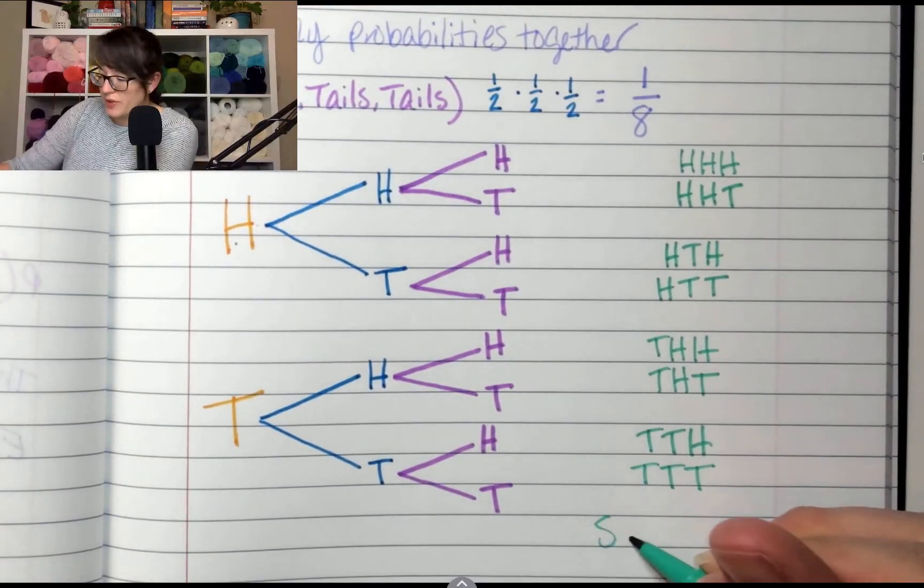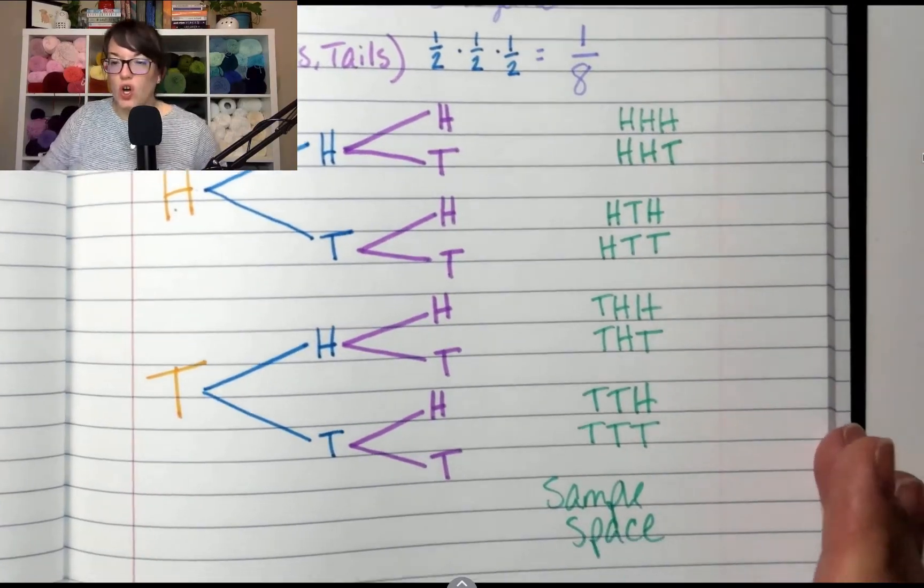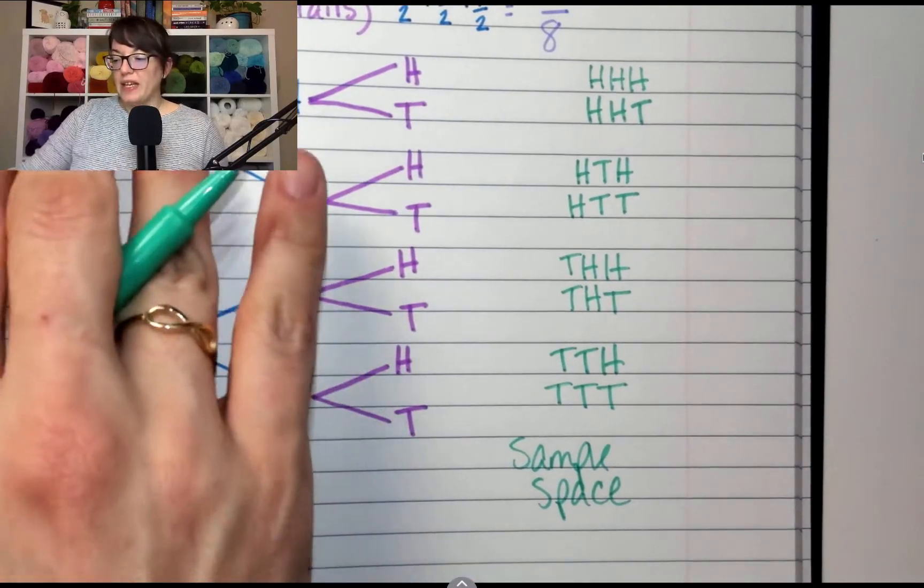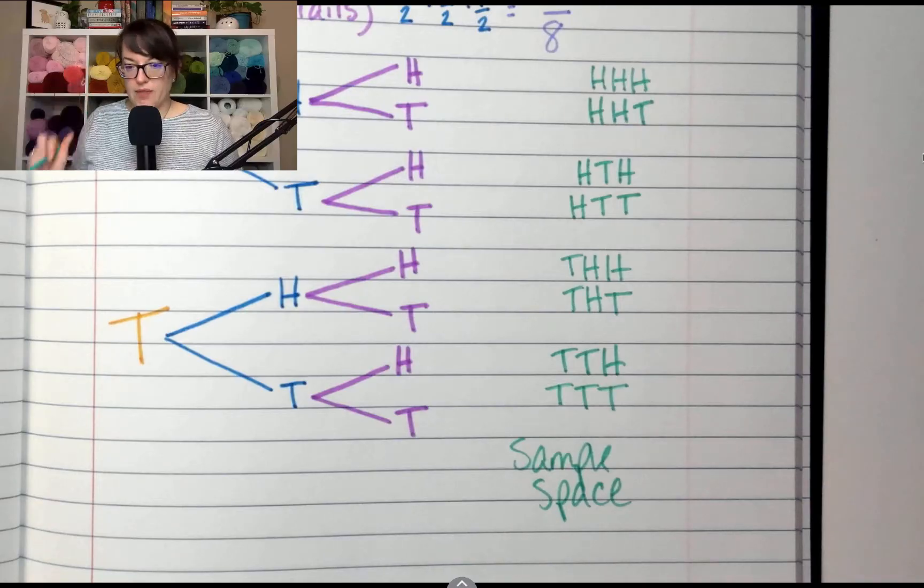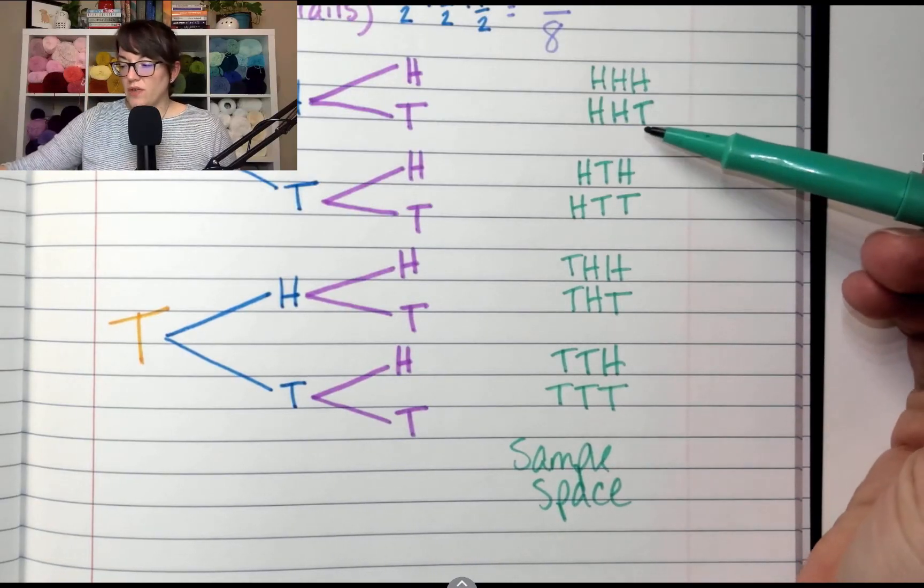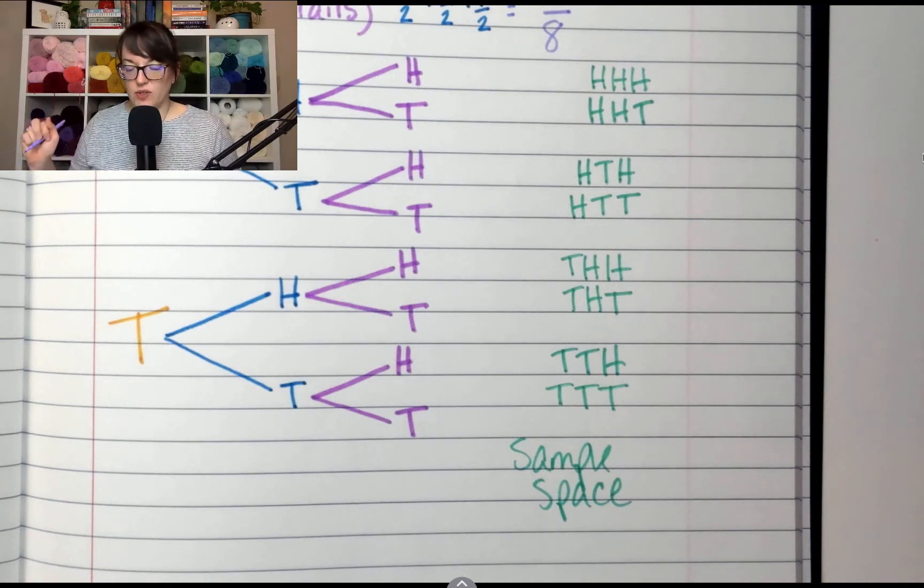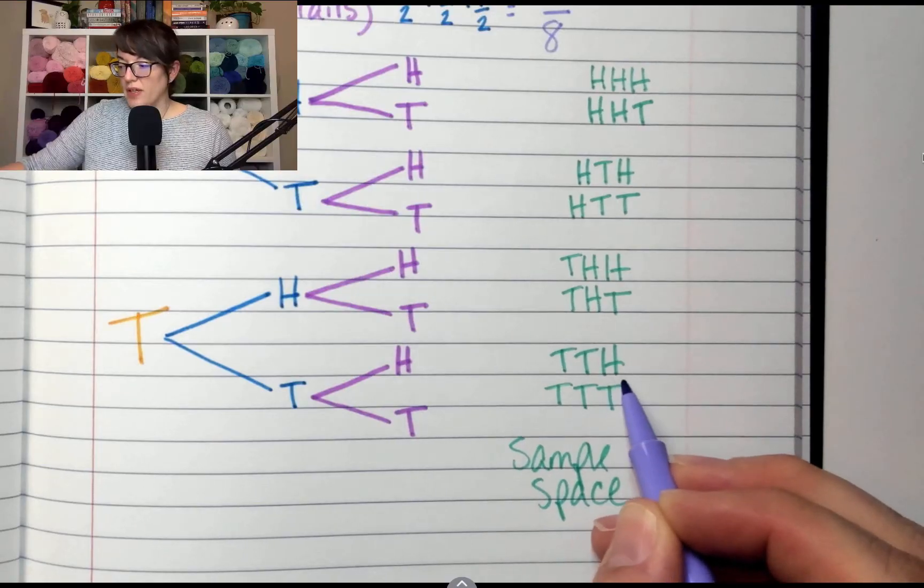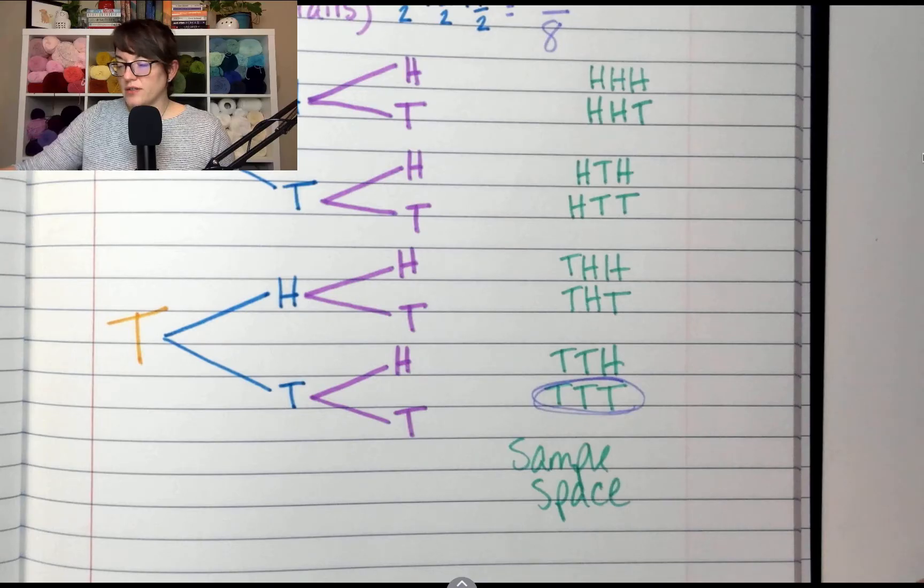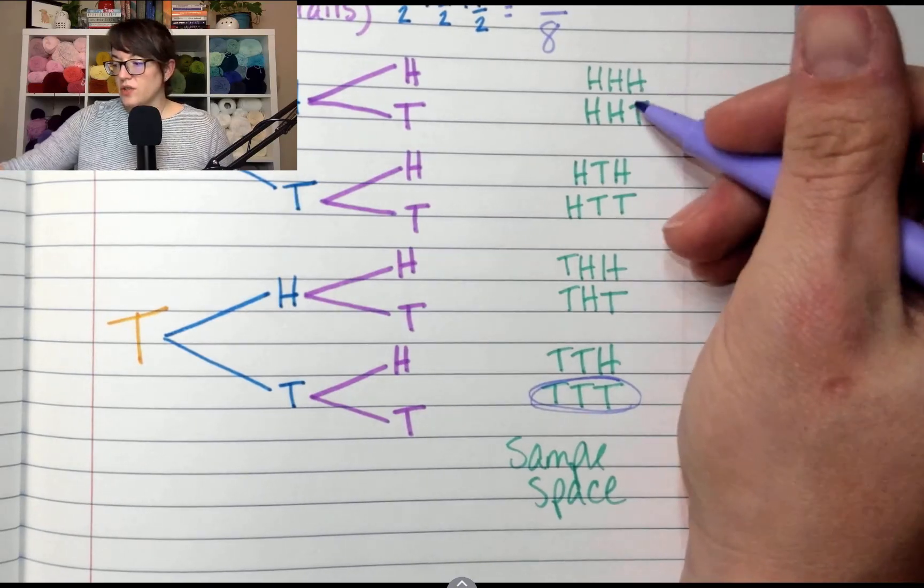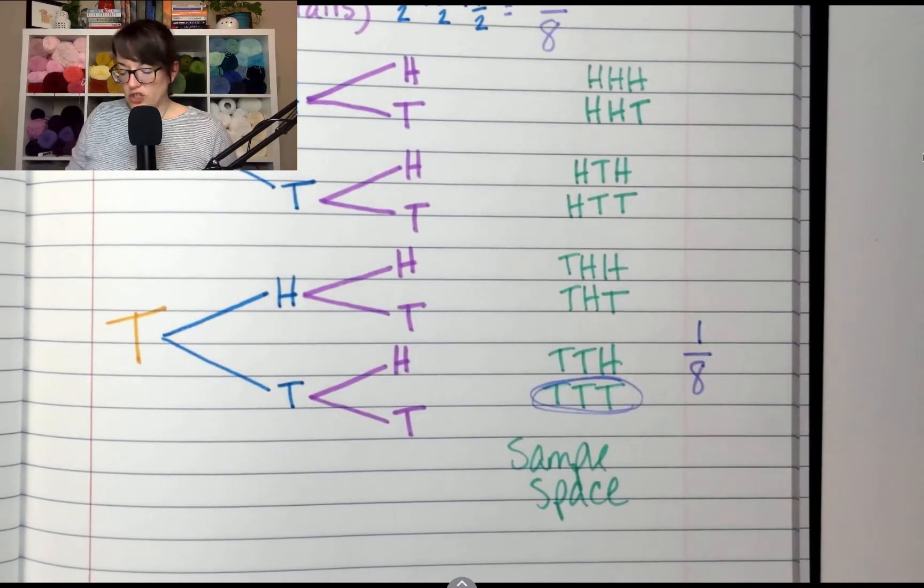Now, this is called a sample space, where you list all the possible outcomes. Now, at the beginning, my question was, I wanted to flip a coin three times and land on tails three times. Looking at all of the possible outcomes, how many times did I get tails, tails, tails? One time right here. Out of how many total combinations were there? Eight. Two, four, six, eight. So this is a one in eight chance.